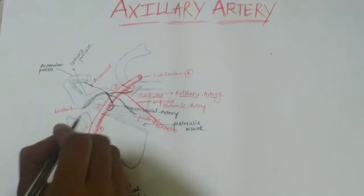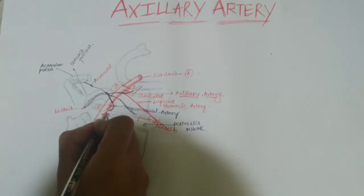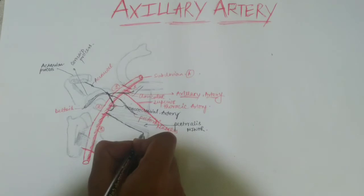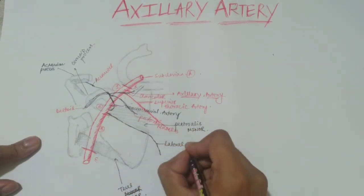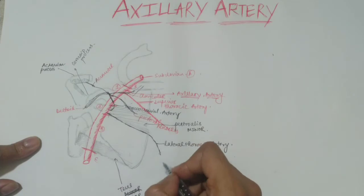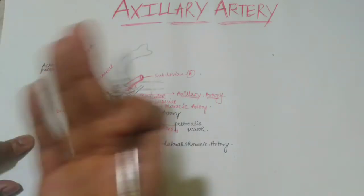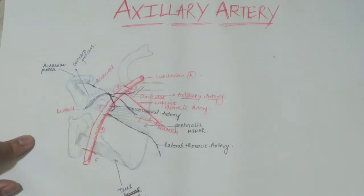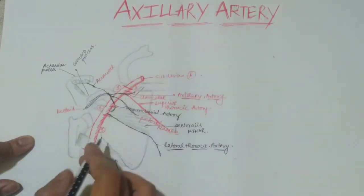The second branch from the second segment is the lateral thoracic artery. It arises and runs to the inferior border of the pectoralis minor muscle, continuing into the lateral part of the thorax. It is also called the lateral mammary artery because it supplies the lateral part of the mammary gland in females, as well as the lateral wall of the chest. This completes the two branches from the second segment.